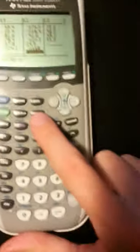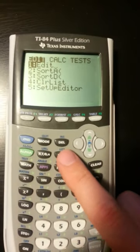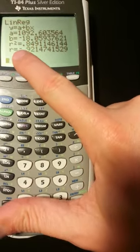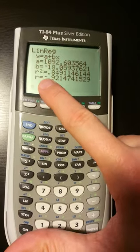Now I've got the data entered. I press stat, then calc, then number eight, enter. And that's my correlation coefficient. I need to be sure to include the negative sign for this.